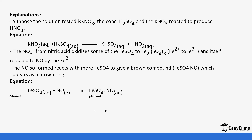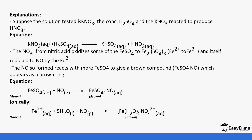The iron(II) sulfate reacts with NO to form the complex. In the ionic equation, the iron(II) ions are oxidized to iron(III) ions and the nitrogen(II) oxide reacts with iron(II) sulfate to form the brown complex.